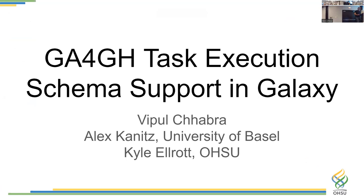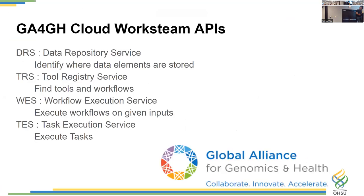Here today to talk about task execution schema. The Global Alliance for Genomics and Health has a cloud workstream working on several different APIs. These include the previously mentioned data repository service, a tool registry service, a workflow execution service, and finally the task execution service, which is what I'll be talking about today.